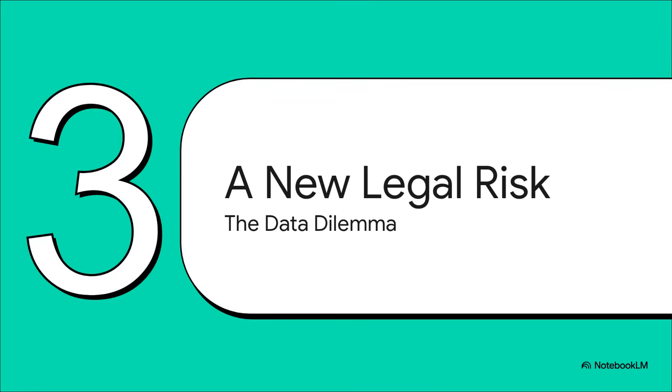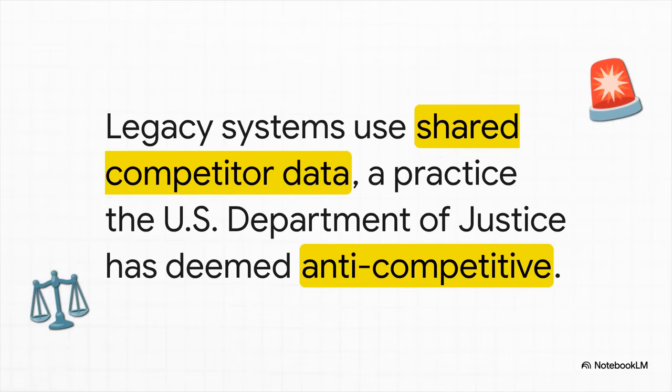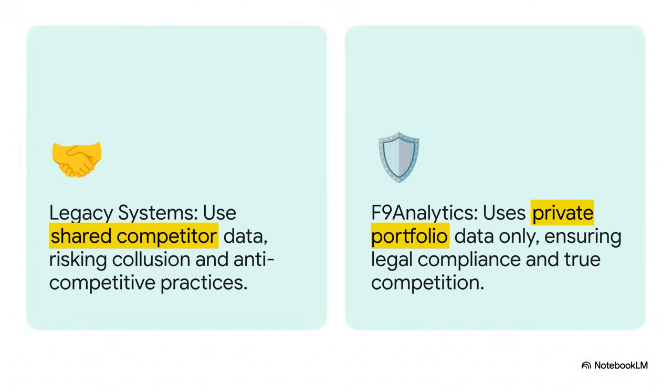So we've established the problem is a lot harder than it looks, but it actually gets worse. The way many companies have been trying to solve it has now become a massive legal liability. For a long time, some of the most popular software systems out there tried to beat this probability problem using one specific method: sharing competitor data. But recently, the Department of Justice has taken a very hard look at that practice and has flagged it as potentially anti-competitive. That creates a gigantic risk for anyone still using those old-school systems.